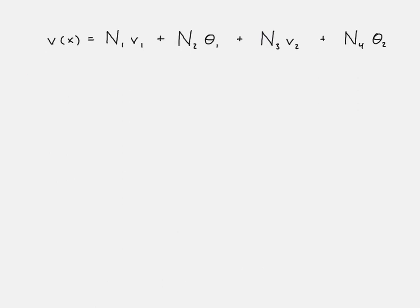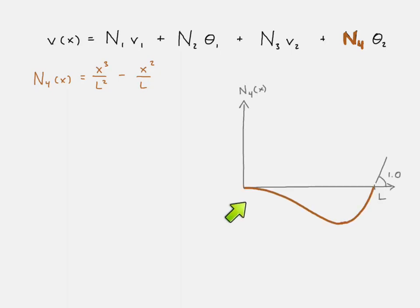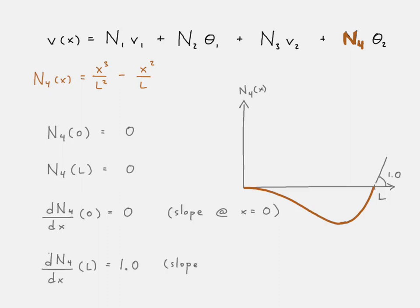Alright, then we'll go to the next one. Here's our displacement function written in terms of our shape function again. We'll highlight the fourth one, write out the cubic polynomial equation for this, go ahead and draw it out. And here you can see that the value is zero at both ends, but we have a slope of 1.0 at that other end. So there we see our fourth shape function is equal to zero at either end, but its slope is only zero at the first end, and it is equal to one at the final end.